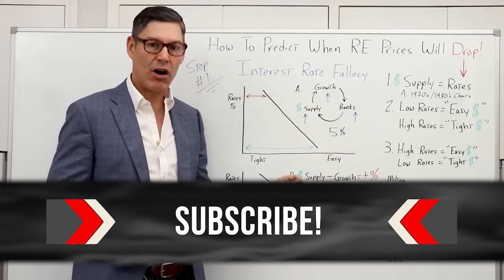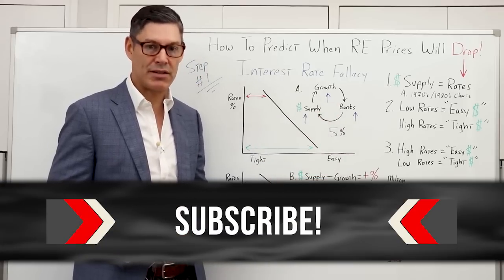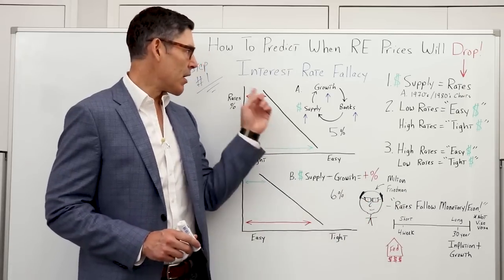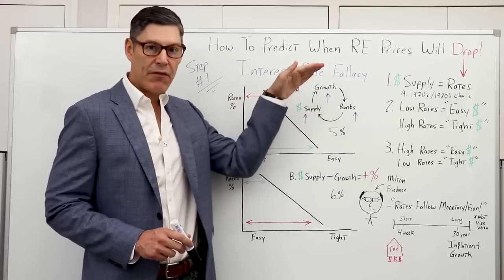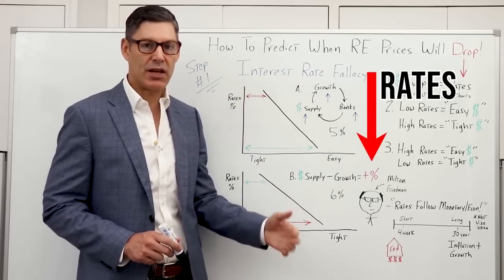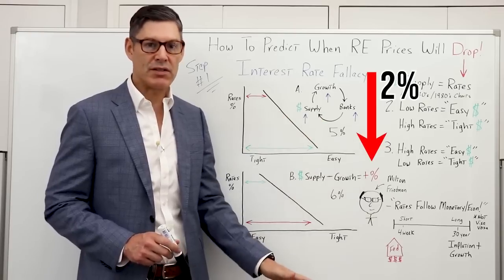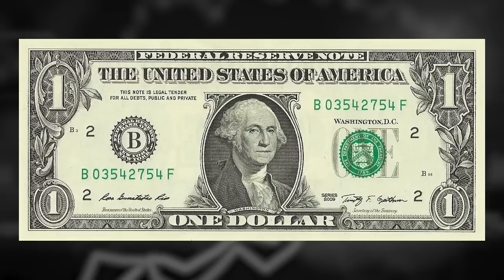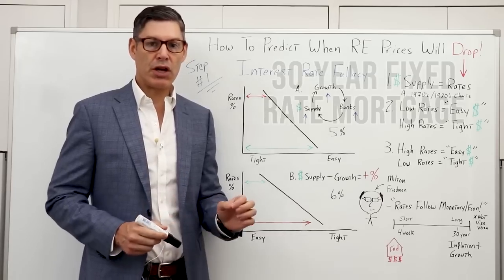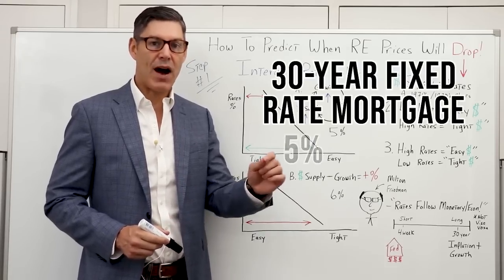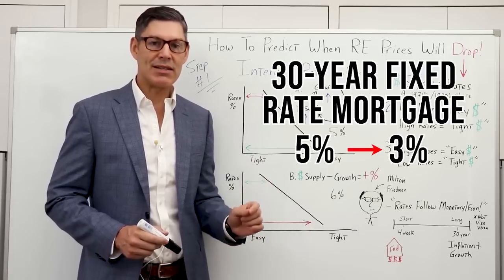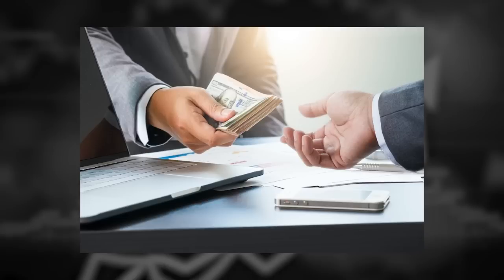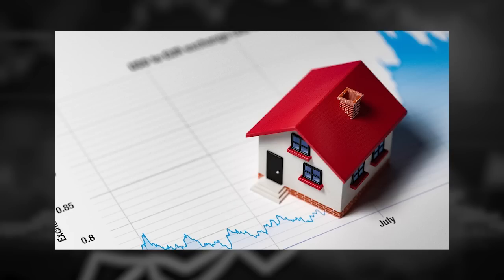That brings us to the main takeaway of step one: if the Fed lowers rates — say from 2% on the Fed funds rate down to zero — although rates may come down even at the long end of the curve, money is getting tighter. So even if a 30-year fixed rate mortgage goes from 5% down to 3%, it doesn't necessarily mean you can get the loan. If fewer people can get loans, there's less demand, and this puts downward pressure on housing prices.